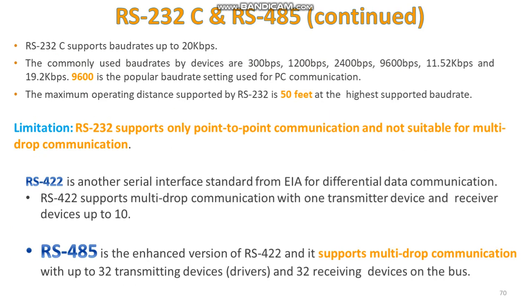RS-232C supports a baud rate of 20 kbps, and the commonly used baud rates are 300 bps, 1200 bps, 2400 bps, and others. The most popular baud rate is 9600 for PC communication. The maximum operating distance supported by this interface is 50 feet. One limitation is that it only supports point-to-point communication, not multi-drop communication.